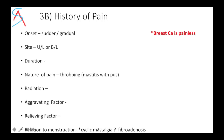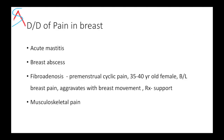Relation to menstruation is very important. In cyclic mastalgia, increased prolactin level from the pituitary can result in cyclic pain. It could also be because of fibroadenosis. The common differential diagnoses for breast pain are acute mastitis, breast abscess, and fibroadenosis. For fibroadenosis, pain would be premenstrual cyclic pain and will aggravate with movements like running, jogging, or with musculoskeletal activity.